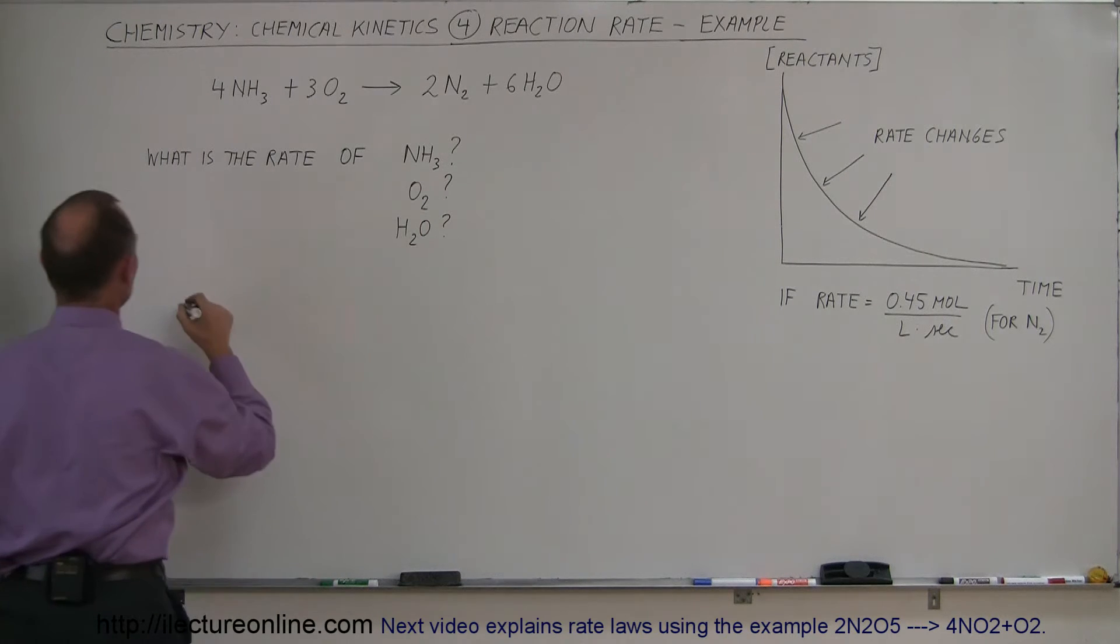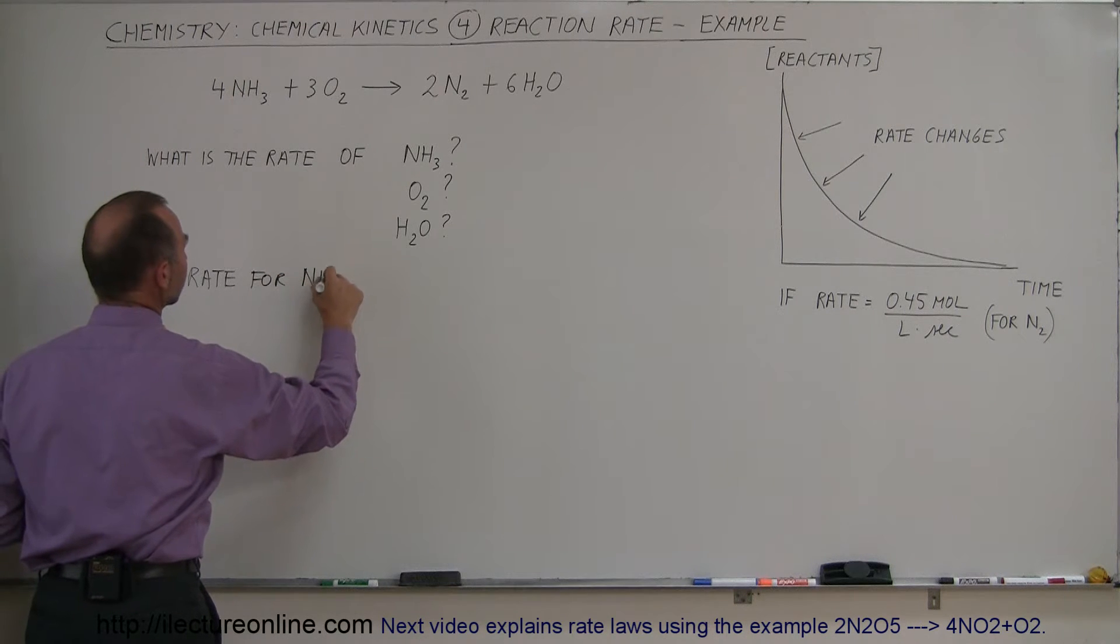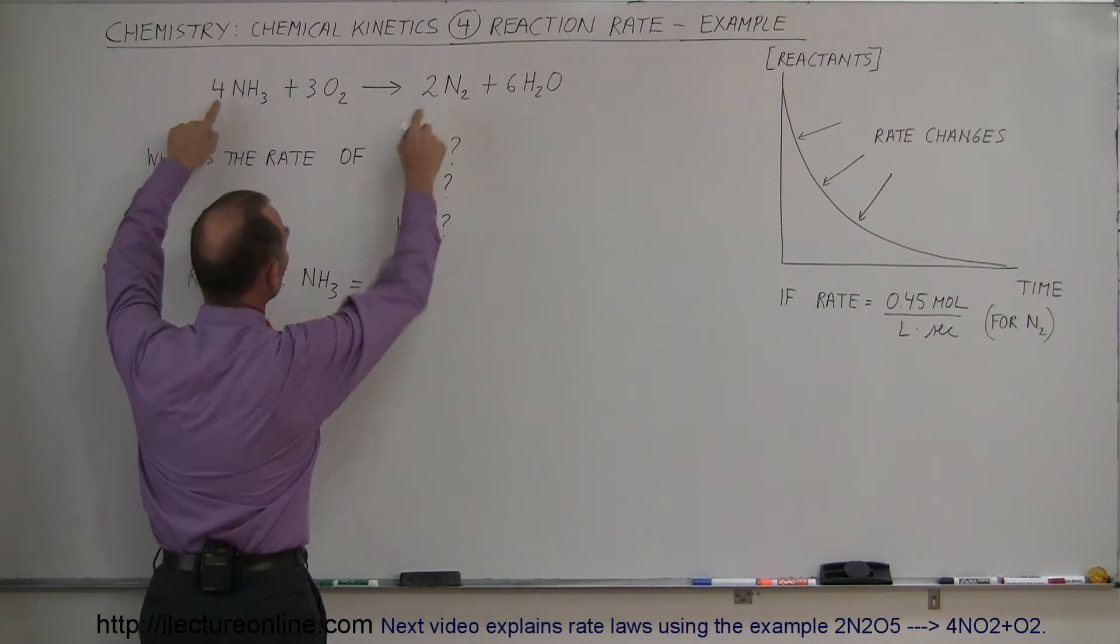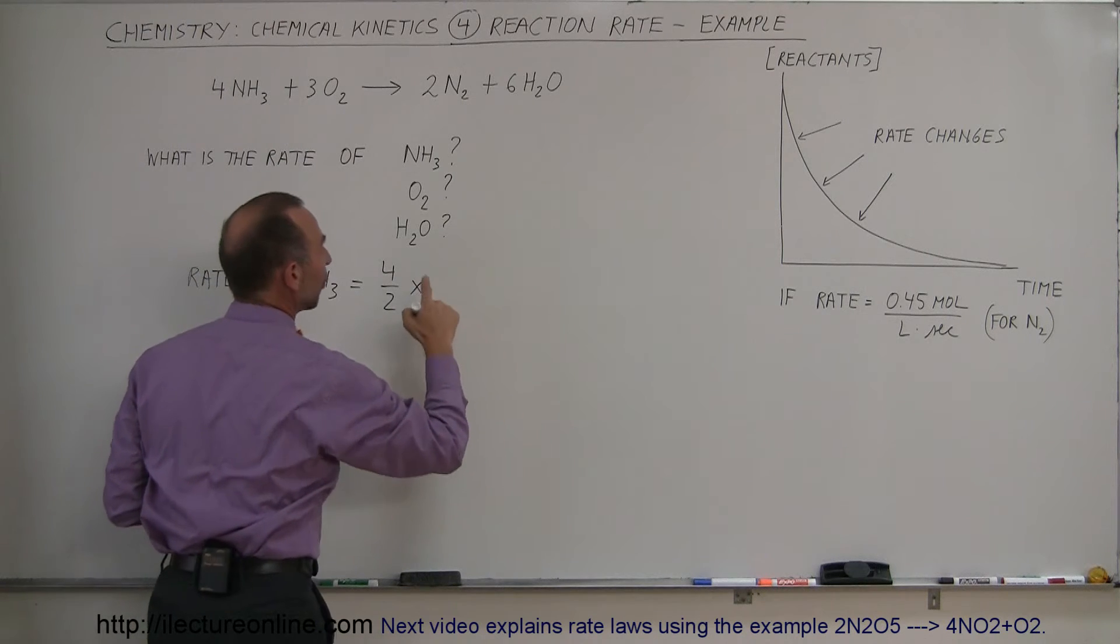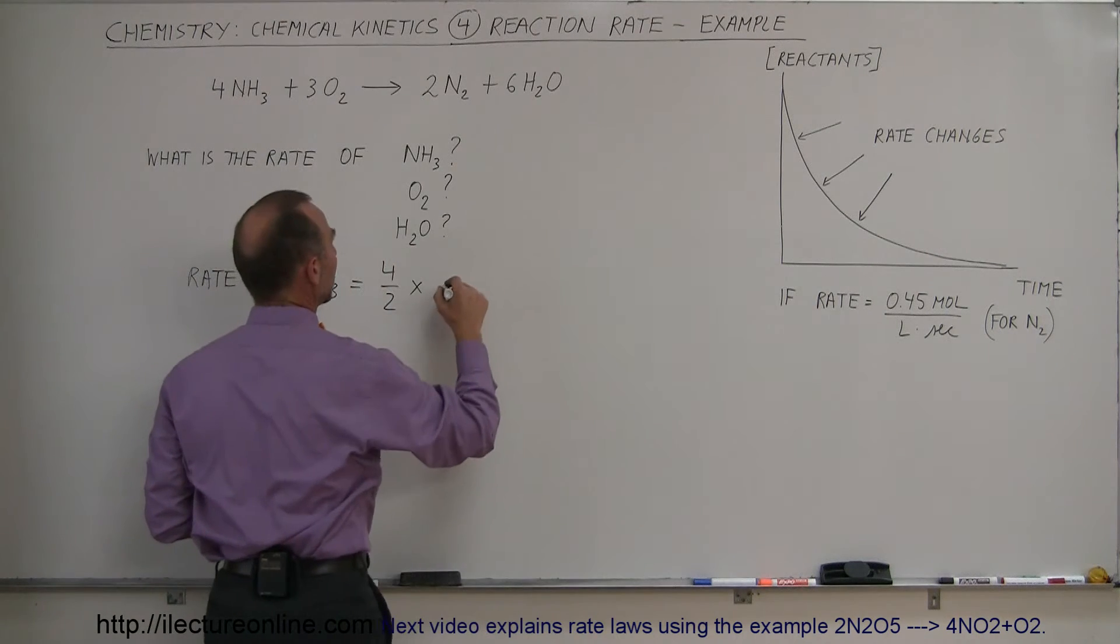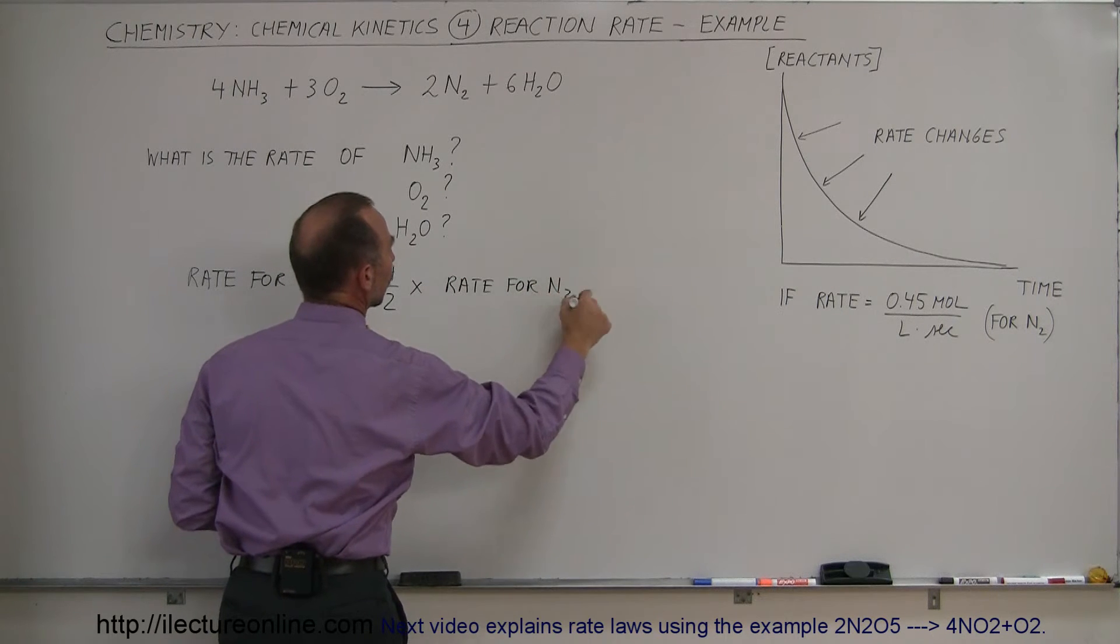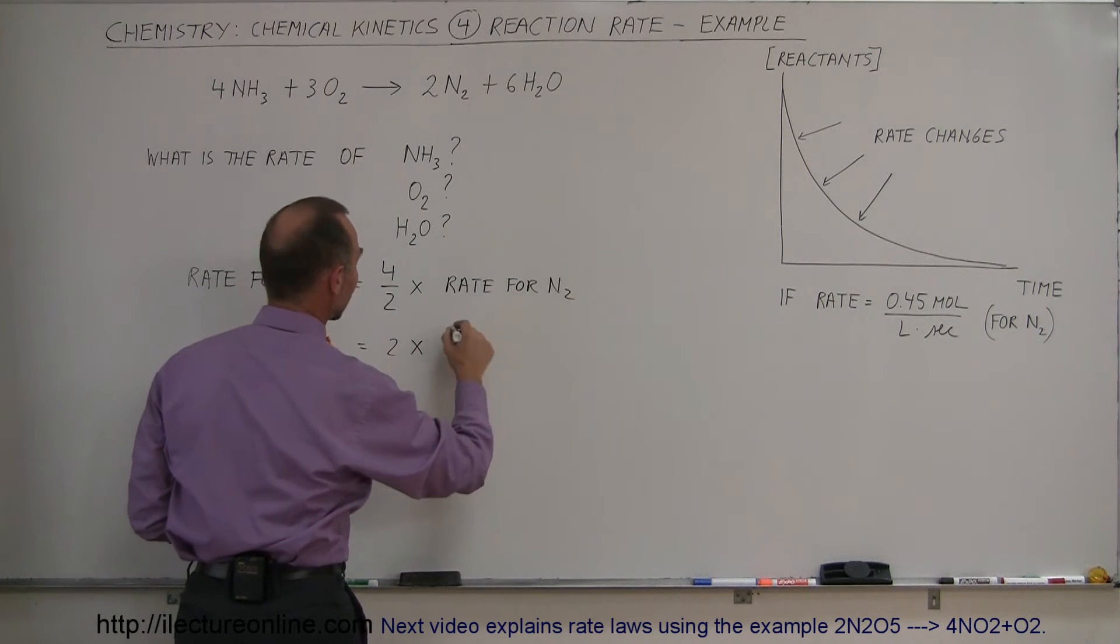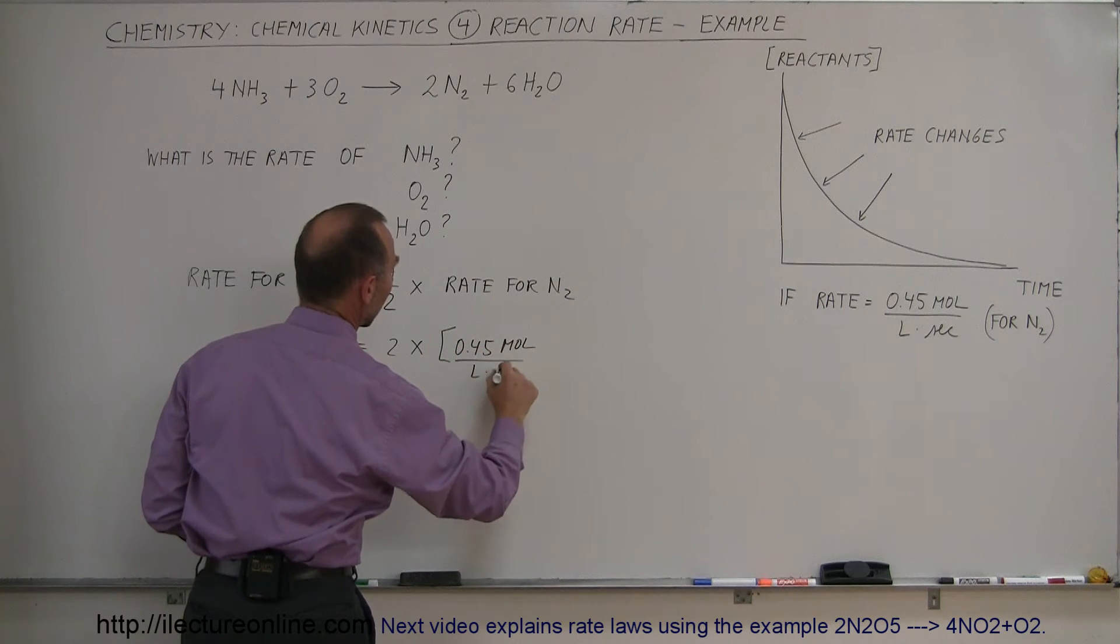So let me show you the example. So for ammonia right here, we can say that the rate for ammonia NH3 is going to be equal to the ratio 4 moles to 2 moles. So it would be 4 divided by 2 times the rate for the nitrogen gas. So it would be times the rate for N2.